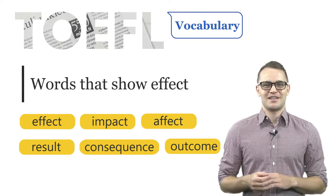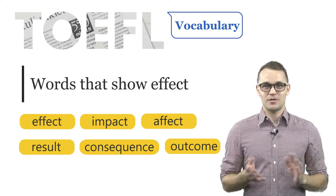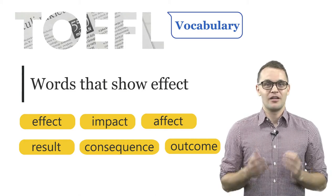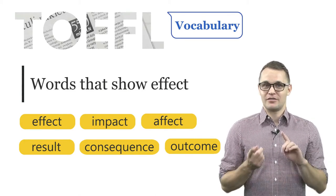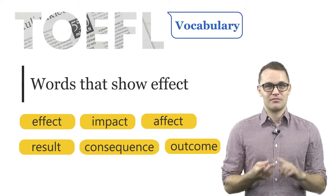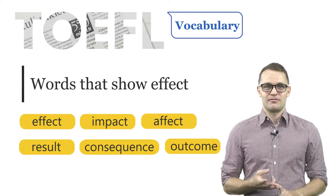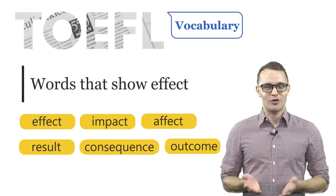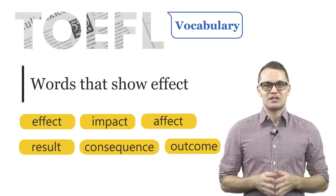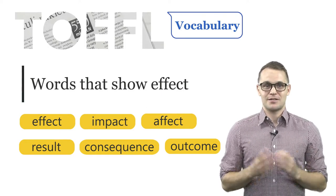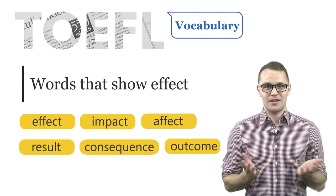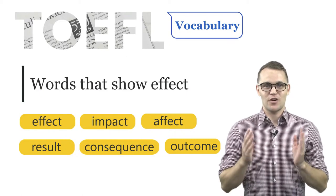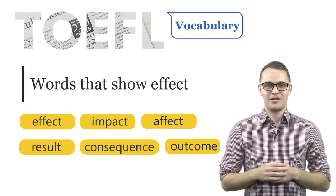Hi and welcome to Best My Test. In today's video we are going to look at words that show effect. The words we are looking at today are effect, impact, effect, result, consequence and outcome. They are extremely important in TOEFL and IELTS exams, especially in speaking and writing sections. That's why in today's lesson we are going to show you how to use them properly in English.